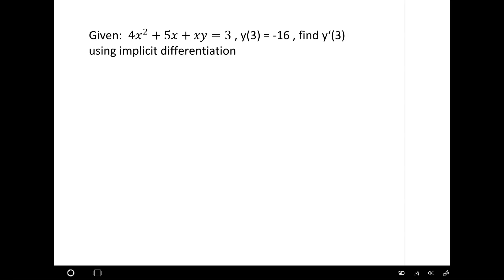Hi, today we're going to use implicit differentiation to find the derivative at a given point. The function we're given here is 4x² + 5x + xy = 3.